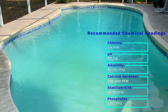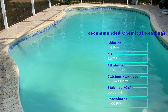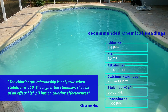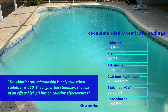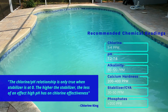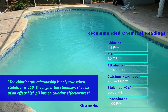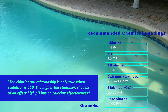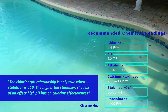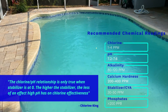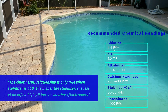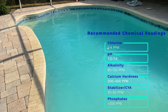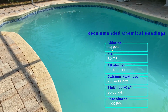The next thing you want to look at is your pH. If your pH is too high, the chlorine is less effective — in fact, it's about 50% less effective at 7.8 than it is at 7.2. So you want to make sure that your pH is good. Another chemical you want to look at is your stabilizer level.